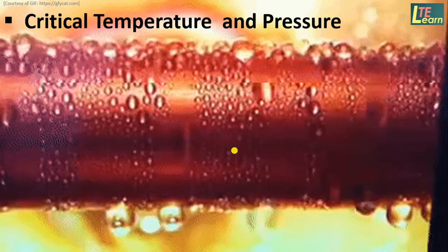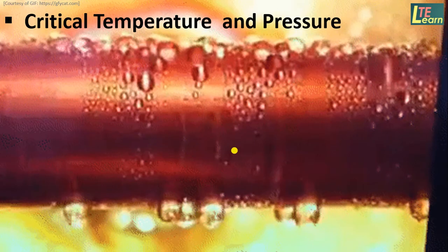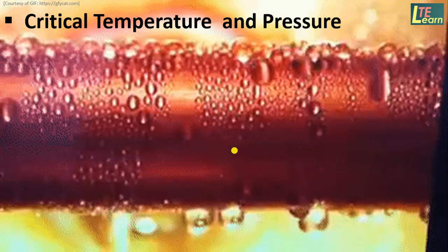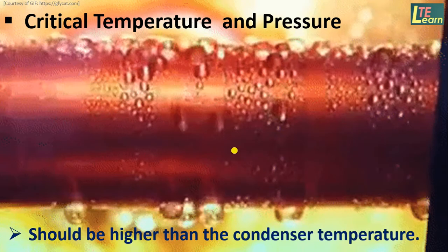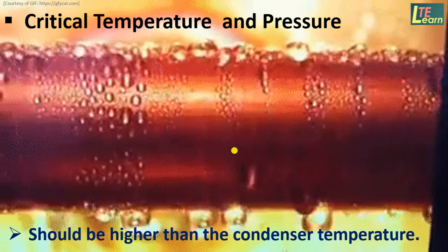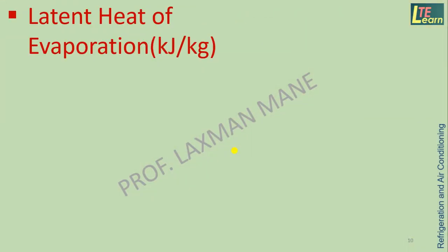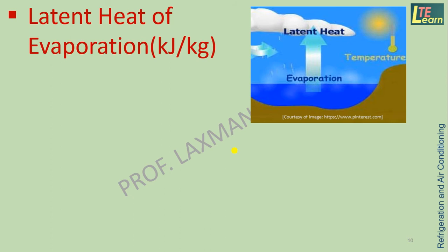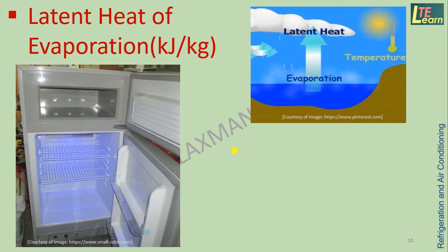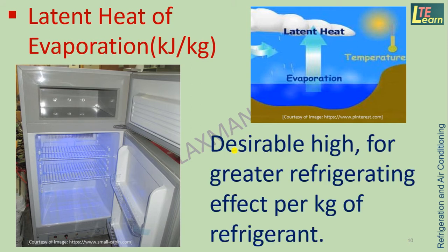Critical temperature is the temperature below which it is not possible to condense or liquefy the refrigerant. Hence, the critical temperature of the refrigerant should be higher than the condenser temperature. Latent heat of evaporation of the refrigerant is the amount of heat in kilojoules absorbed by 1 kg of refrigerant from the space to be cooled, and it should be high for a greater refrigerating effect per kg.